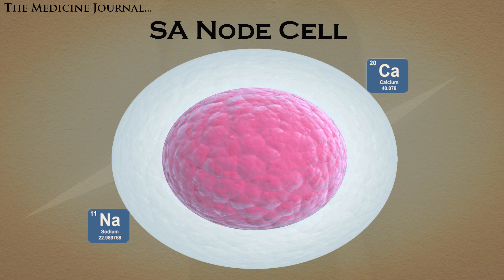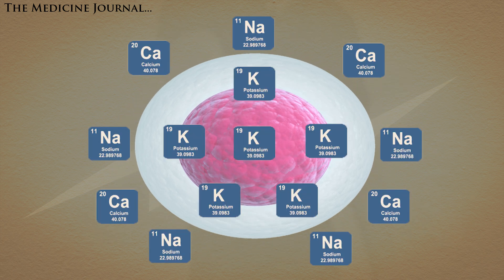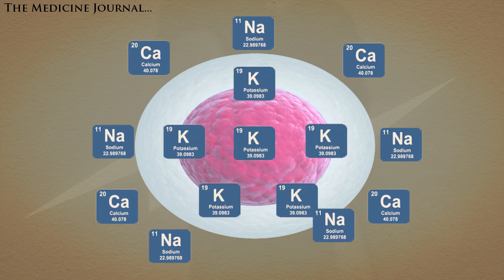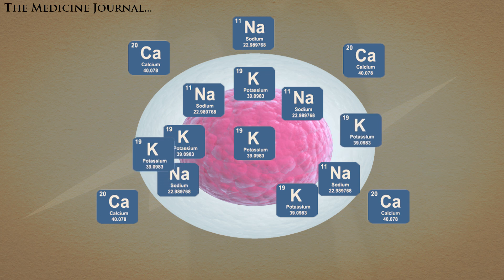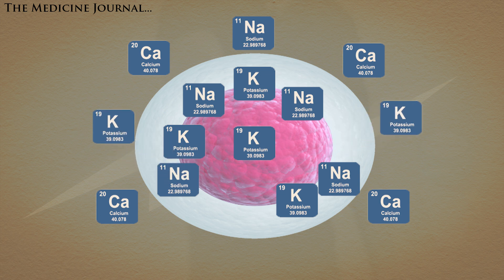Sodium and calcium generally reside outside of the SA node cells, while potassium generally lies within them. The cell membrane acts as a barrier between these electrolytes. Pressure within the bloodstream allows sodium to enter the cell, causing potassium to leave it. Less potassium leaves the cell than sodium entering it, resulting in a continually growing positive charge.